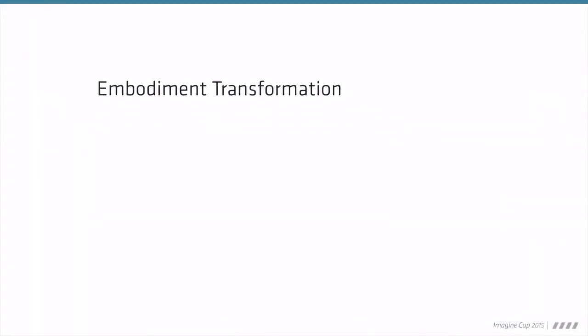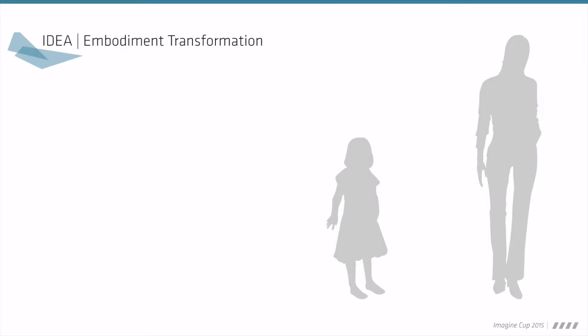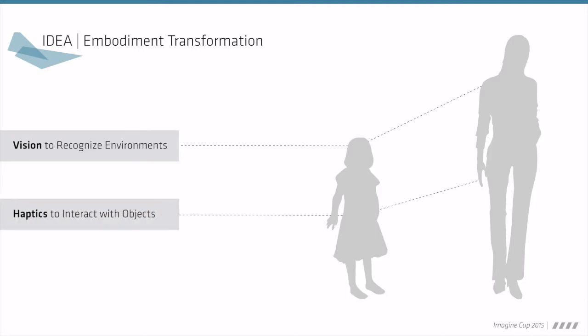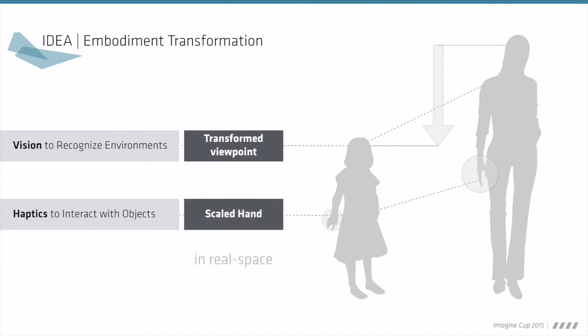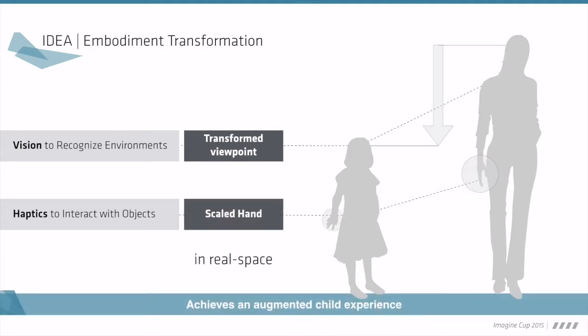The key idea is embodiment transformation: augmenting visual perception of the environment and haptic sensation to interact with objects. Transforming viewpoint and hand into child's level in real space achieves an augmented child experience.